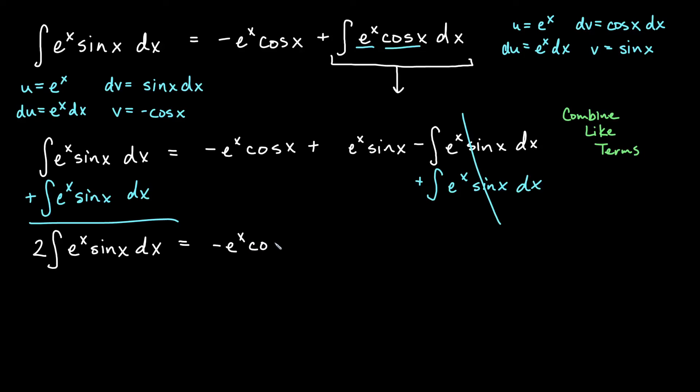So we have equals negative e to the x cosine x plus e to the x sine x. And then how do I solve for this original thing that I wanted? Well, I'd need to get rid of the two. So let's go ahead and divide both sides by two. And then of course, we'll need our plus c. We'll need our constant of integration on there as well.